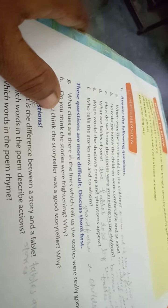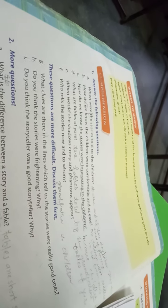Now question number G. What clues are there in the lines which tells us the stories were really good ones? Which clues are there in the story? Kornse clues aise hai? Kornse words aise hai story mein? Joki batate hai ki ye story achi hai.